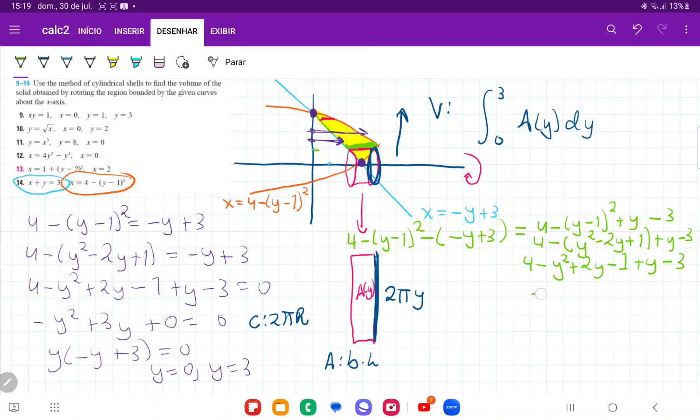So when we collect like terms, that gives us minus y squared plus 2y plus y, so plus 3y. And then we have 4 minus 1, so 3 minus 3, 0. So this here ends up being our base.